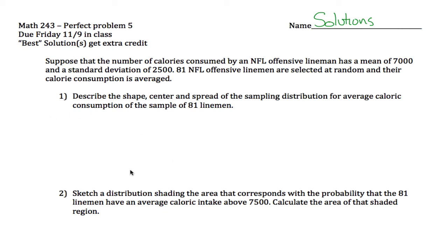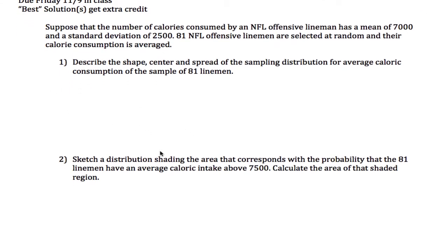Here's Performance Problem 5 solutions for Math 243. We're given that the number of calories consumed by NFL offensive linemen has a mean of 7,000, that's mu, and a standard deviation of 2,500, which is sigma. We have 81 of these people selected at random, so that's our value of n.